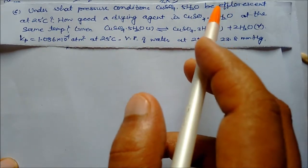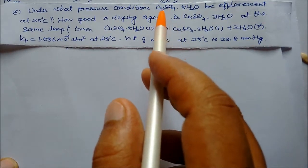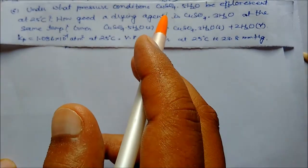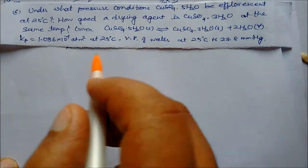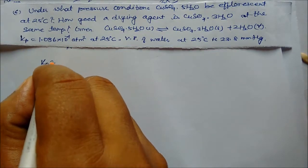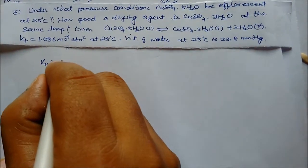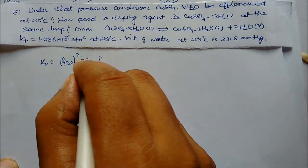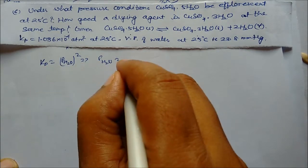Efflorescence means removal of water of crystallization from the salt on exposure to air. Since both copper sulfate compounds are solids, Kp depends only on the partial pressure of water vapor. Kp = (P_H2O)² = 1.086 × 10⁻⁴, so the partial pressure of water = √(1.086 × 10⁻⁴).